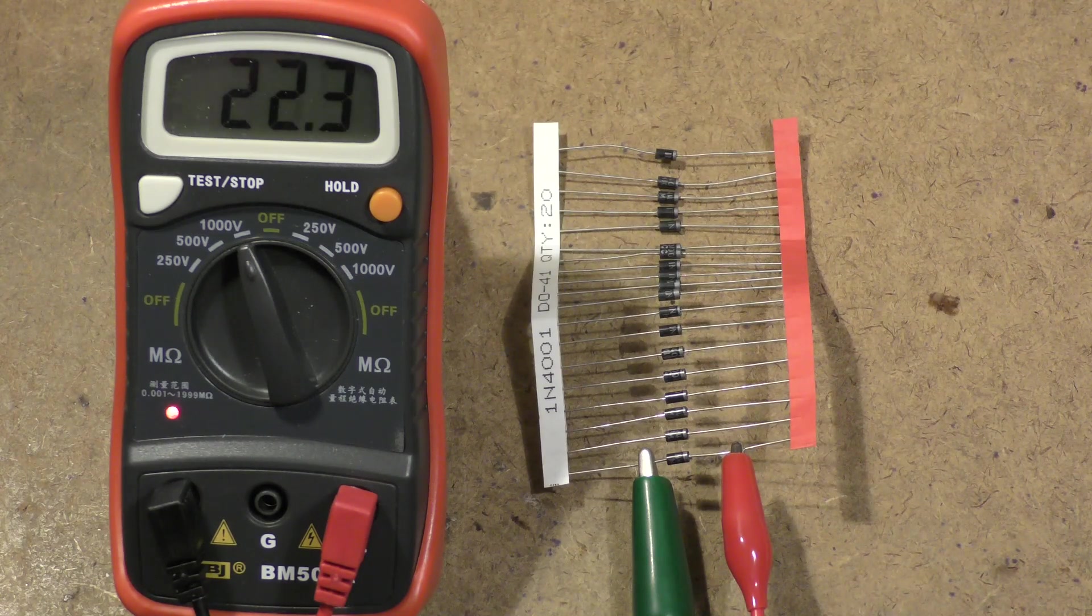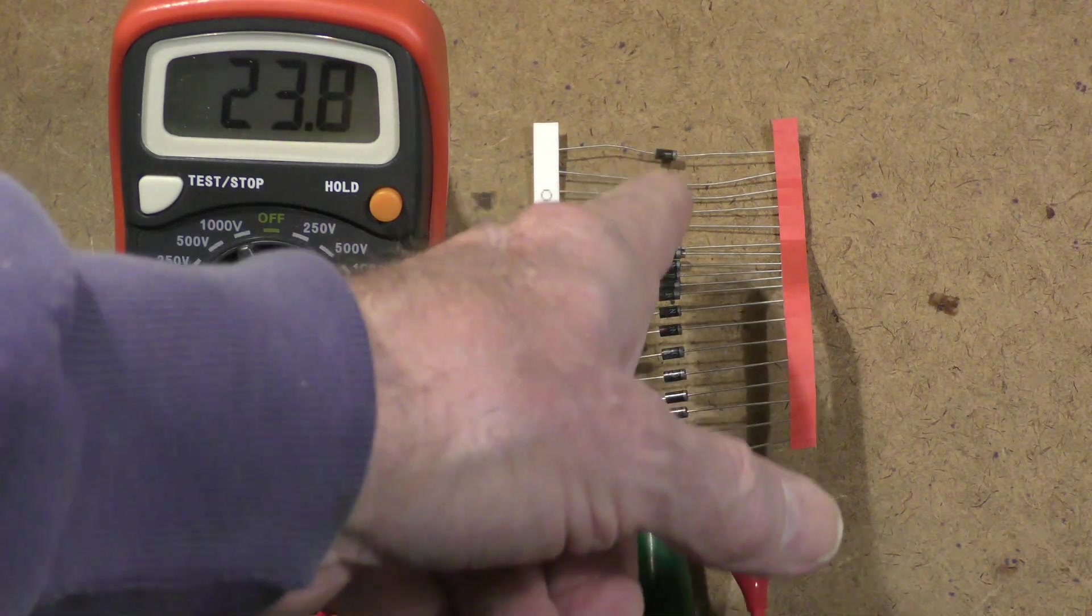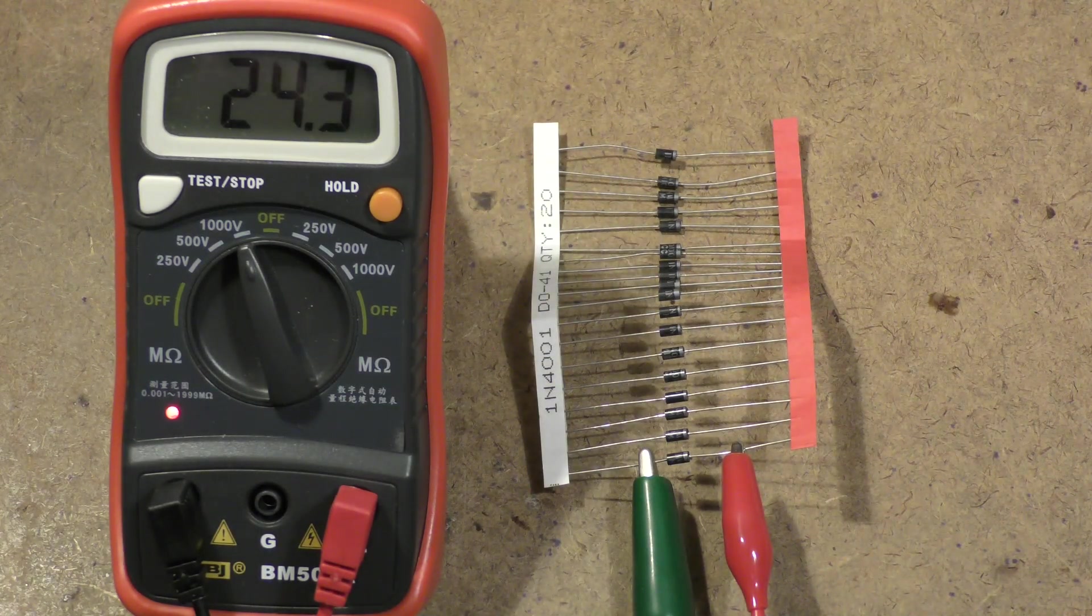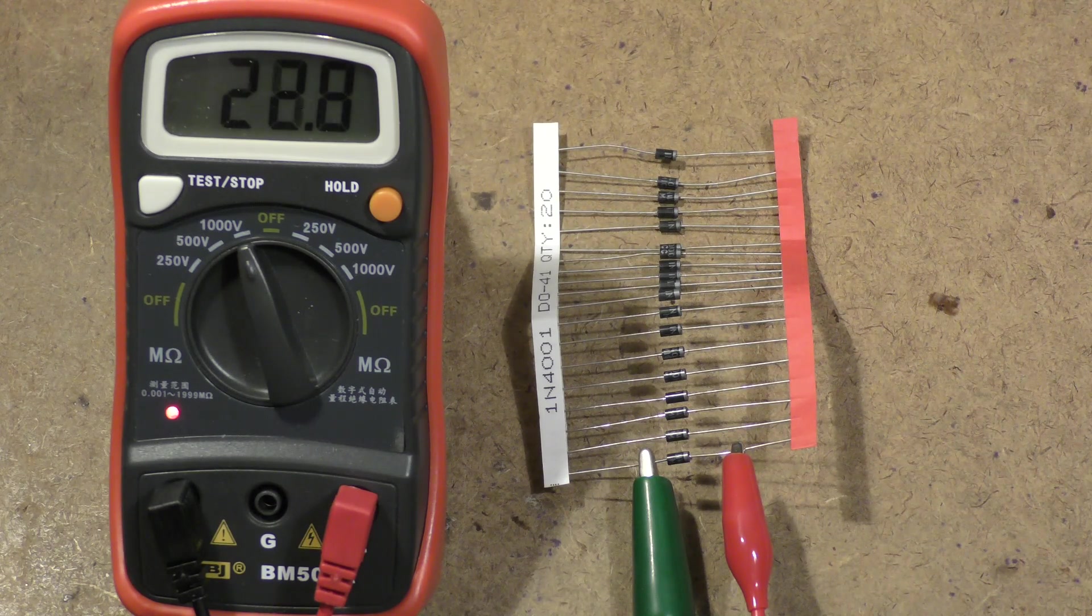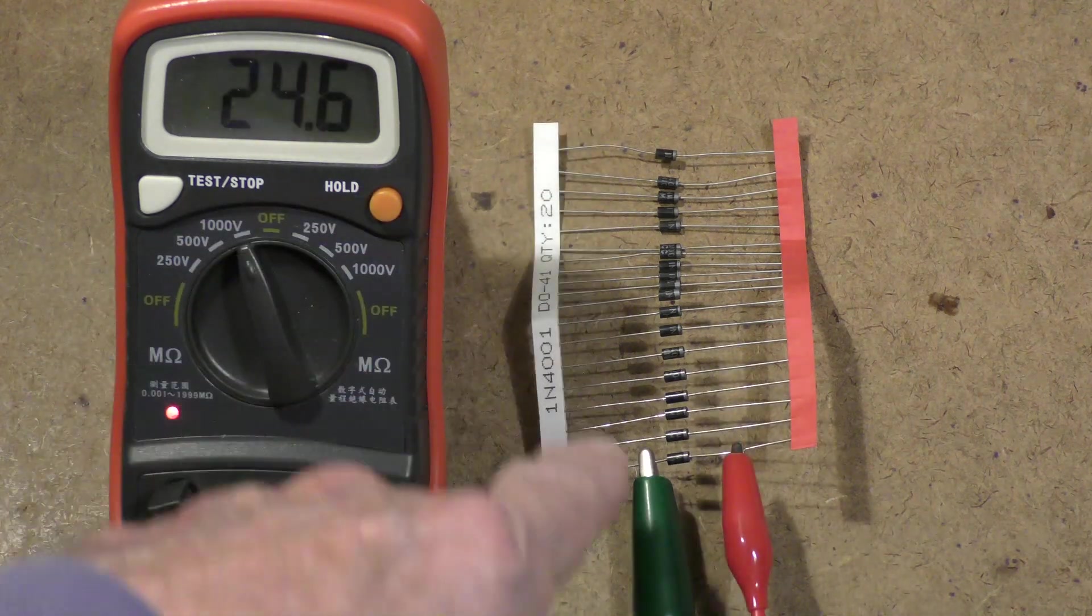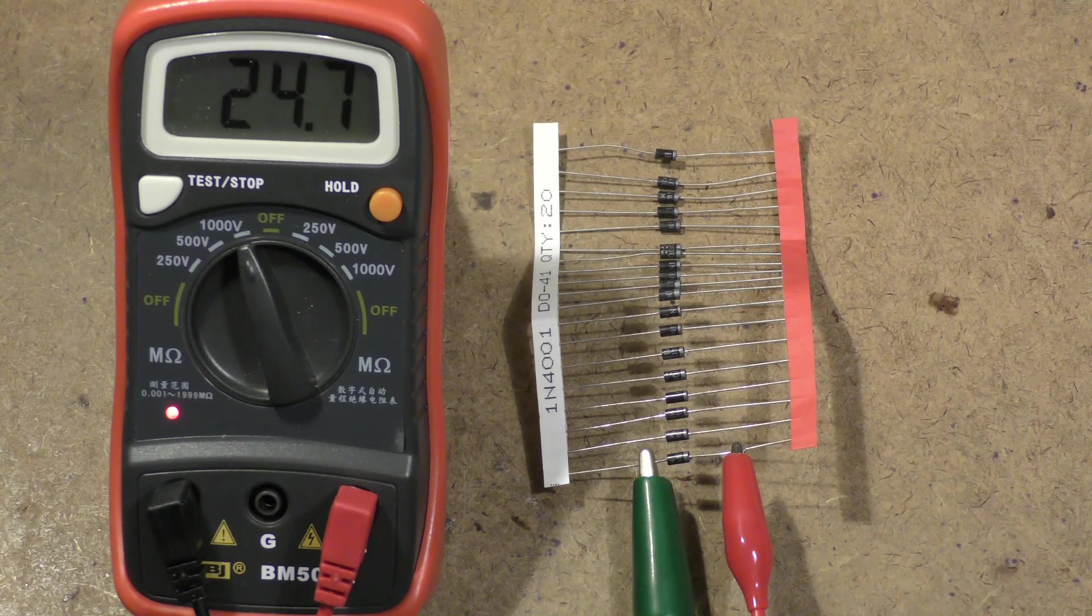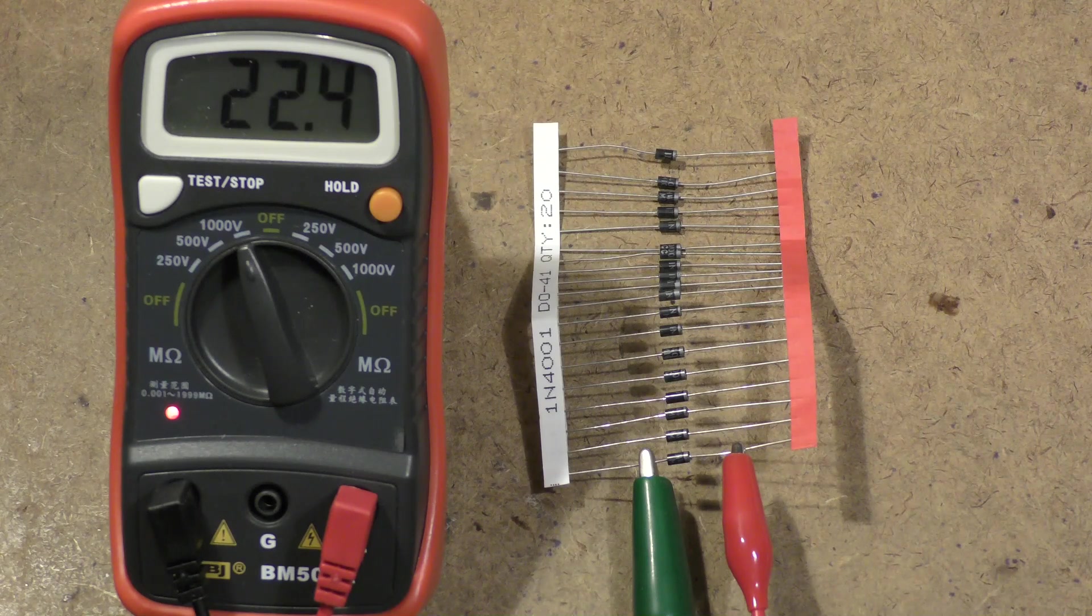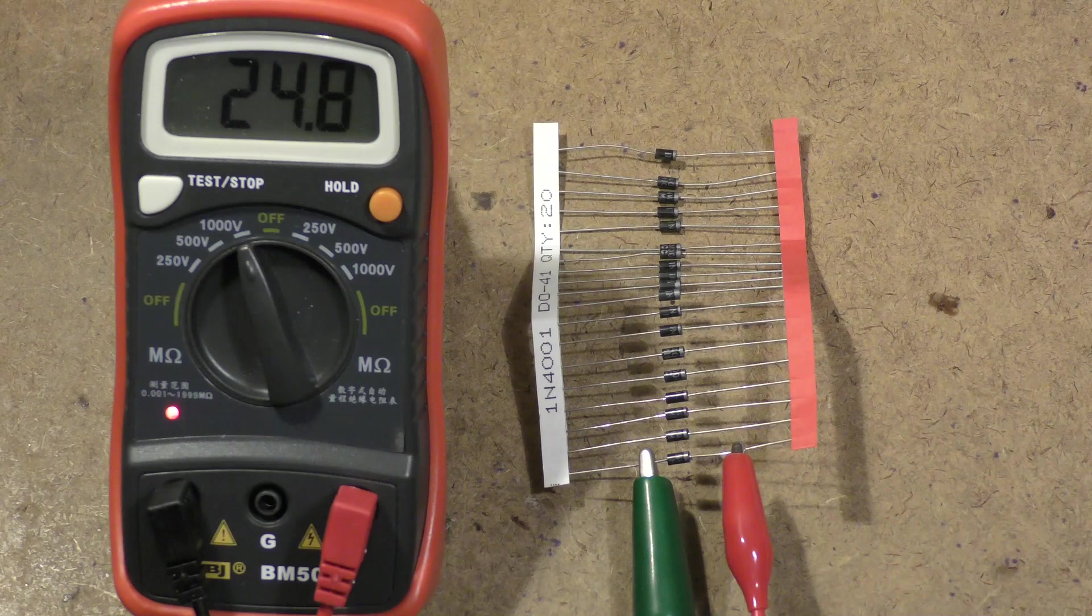What it tells us is that the data sheet tells us what the manufacturer will guarantee the diode to, not what it might necessarily do. Even though this is a string of 1N4001s in the original packaging and I didn't select these, I went through until I found one that broke down in the reverse direction.